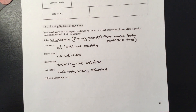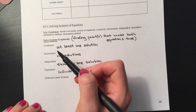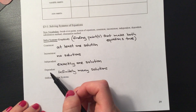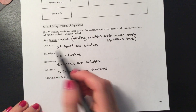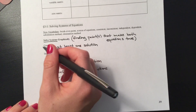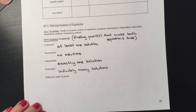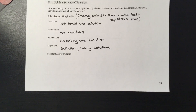A system can either be consistent or inconsistent — you can't be both at the same time. And a solution can either be independent or dependent. If it's inconsistent, it's just inconsistent. If it's consistent, it can be either independent or dependent. So we're going to have three different types of linear systems, and since we're starting with the graphing method, I'll show you what some different options could look like for graphs.